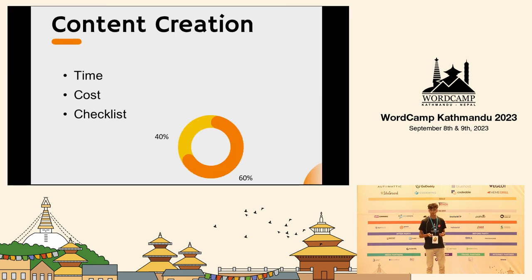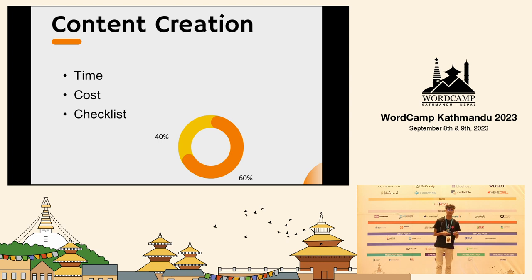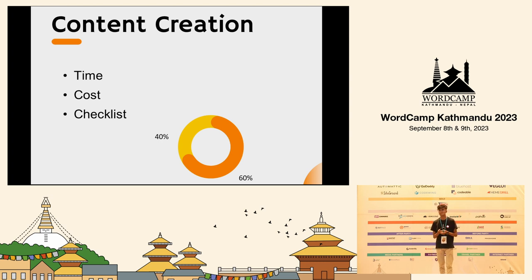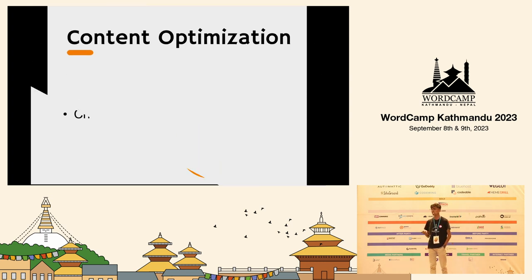For content creation, I apply a 40/60 rule. Roughly 40% can use AI-generated content, but 60% must represent the brand voice, focusing on keyword intent. Content creation does take time — whether it is a blog post, infographic, or data-driven graphic — but AI tools can help apply this process more efficiently.